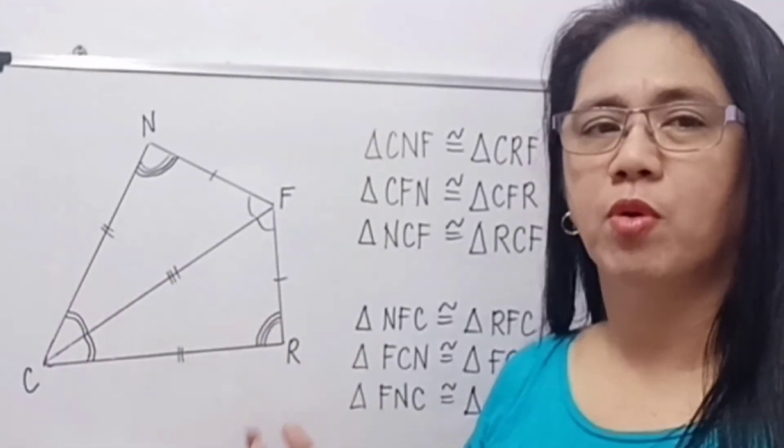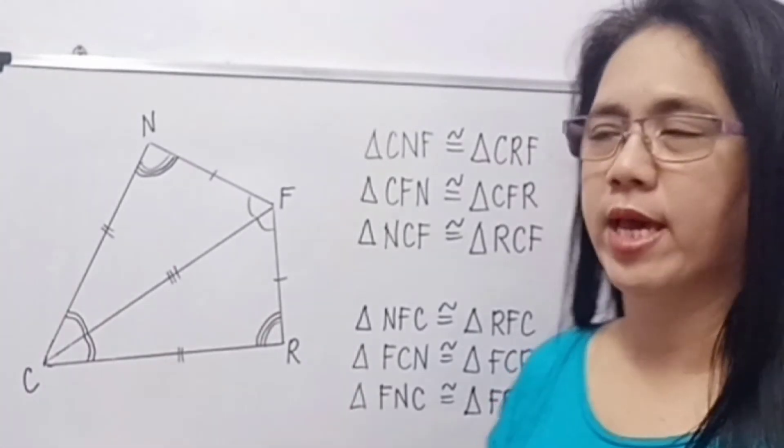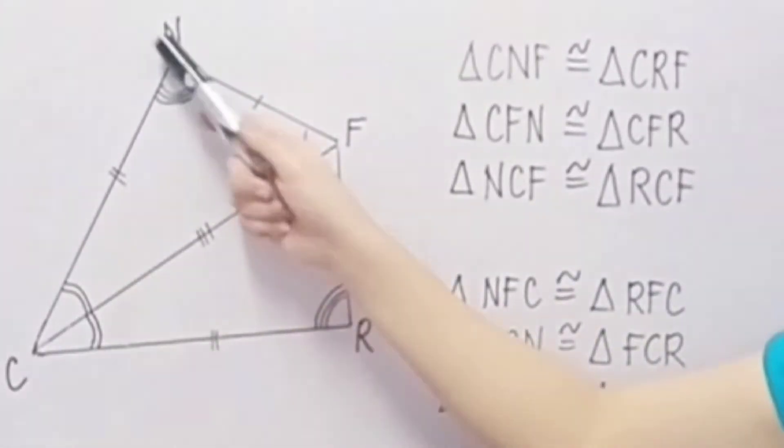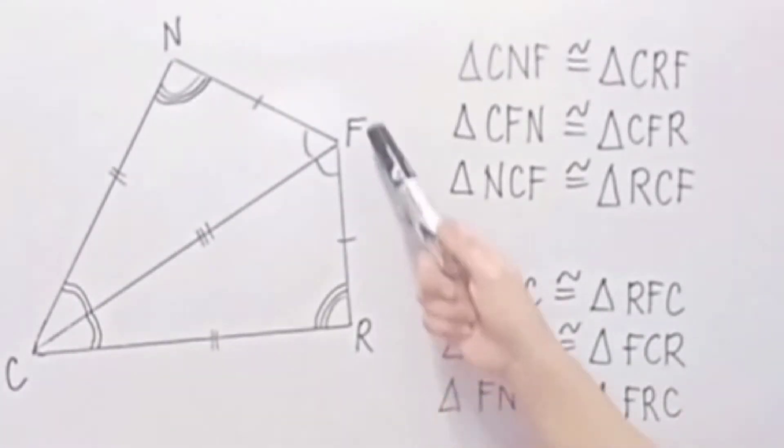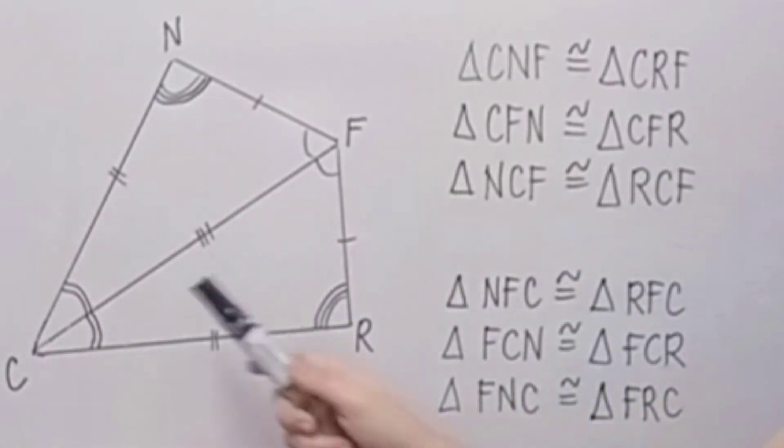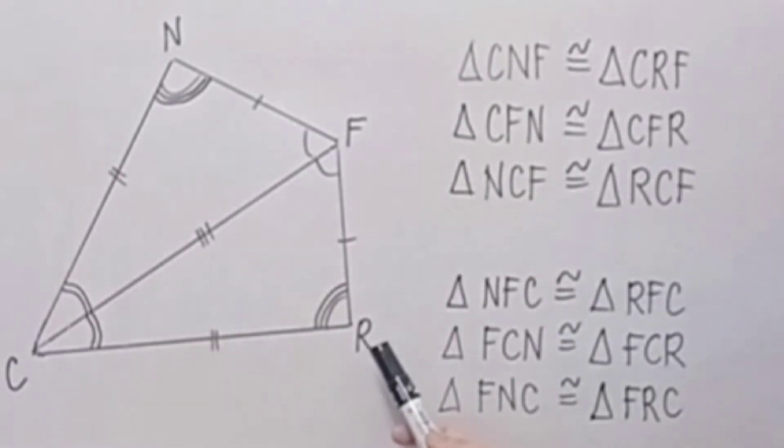So there are many possible ways to name the two triangles that are congruent. In this case, we have triangle CNF is congruent to triangle CRF. That's the first one. Then we have triangle CFN is congruent to triangle CFR.